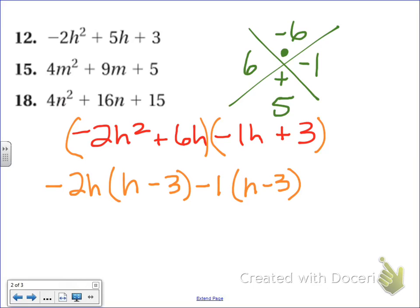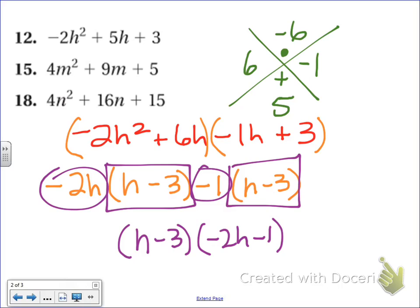All right, and the goal is we need our parenthesis to match, and they do, h minus 3. So we write that once down below. And then we take our leftovers, negative 2h and negative 1, and we put those in another parenthesis.